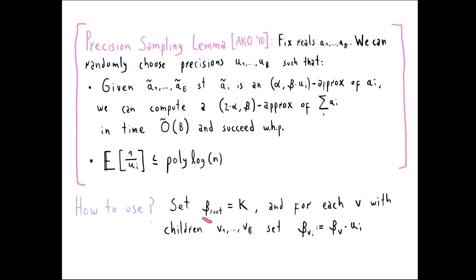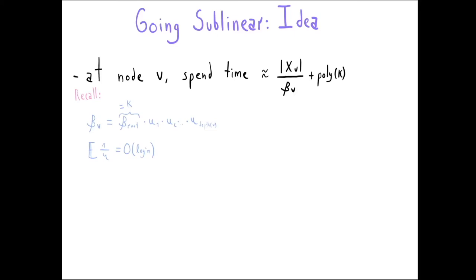We apply the precision sampling lemma as follows: set the additive error at the root to k, and for each node v with children v_1 through v_b, set β_{v_i} = β_v · u_i where u_i is sampled according to the precision sampling lemma. This guarantees that by combining the children's estimates using the lemma's algorithm, we obtain estimates with total additive error β_v, as desired.